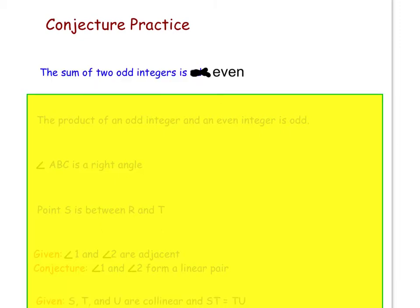Our first conjecture is that the sum of two odd integers is even. Try and find two odd numbers that when you add them together, do you always get an even, or do you sometimes get an odd? Pause the video right now and practice.